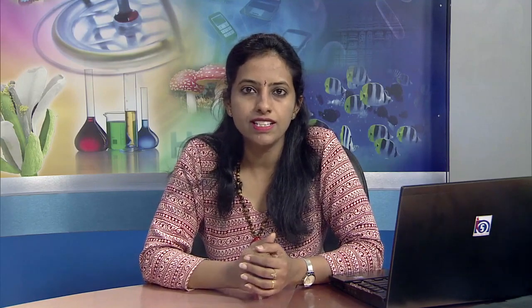The endorsement is used for recording and authenticating changes in the policy. If policy conditions change during the course of the policy, a memorandum is attached to the standard policy. Examples include changes in nomination, assignment, or address. For instance, a cancellation endorsement on stamp paper would state that the policy is cancelled from a particular date, and whether any refund is due to the insured.